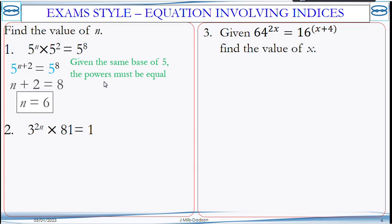Let's look at number 2. You need to remember that a to the power of 0 is 1, or anything to the power of 0 is equal to 1. So we can write 1 as 3 to the power of 0.